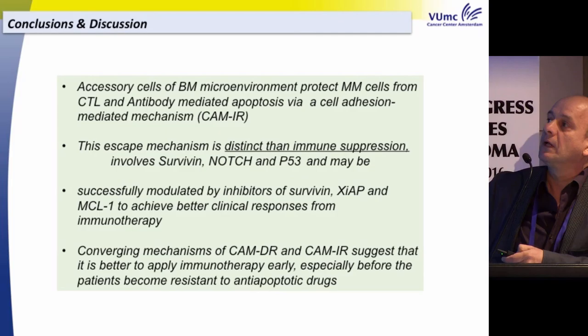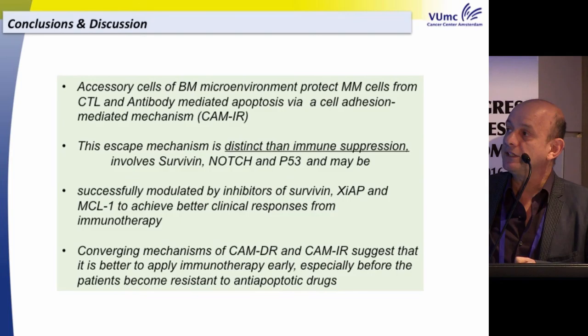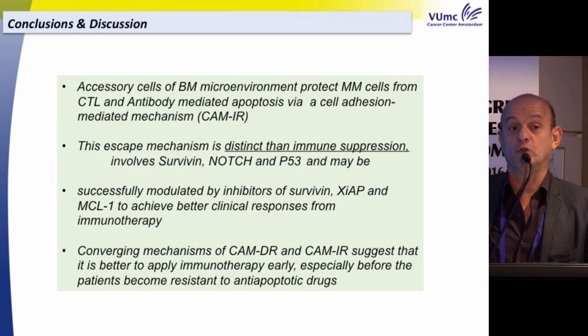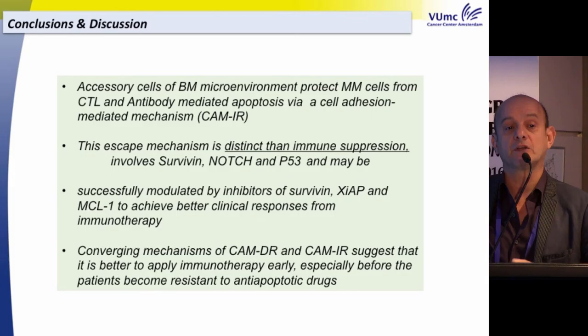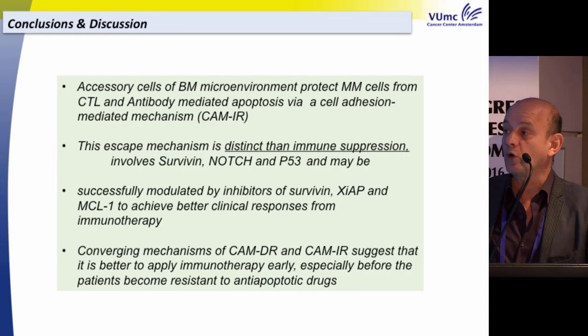In conclusion: accessory cells of the bone marrow protect myeloma cells from CTL- and antibody-mediated treatment. This protection is distinct from immune suppression and involves survivin, Notch, and p53. It can be modulated by small molecules inhibiting survivin. Most importantly, mechanisms of drug resistance and immune resistance converge with each other — which is why it is probably better to apply immunotherapy early, especially before patients become resistant to anti-apoptotic agents. Thank you very much.